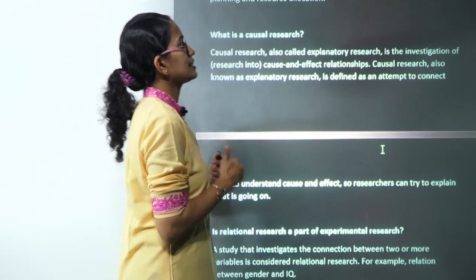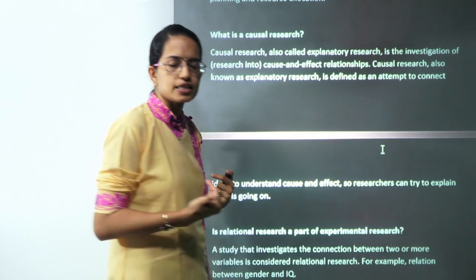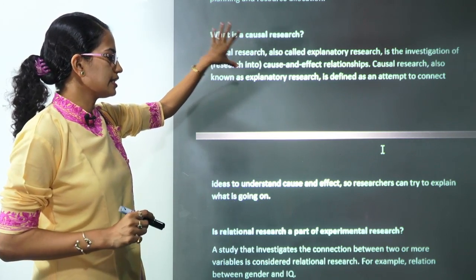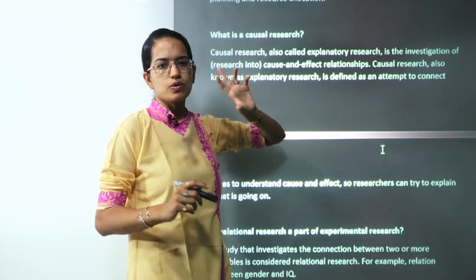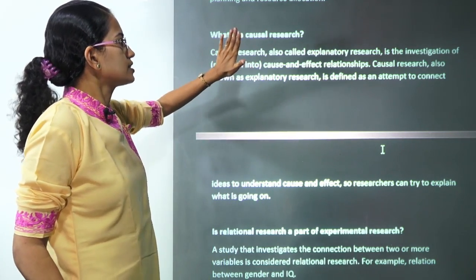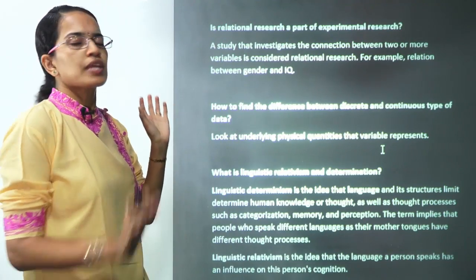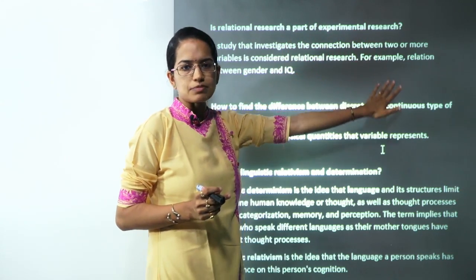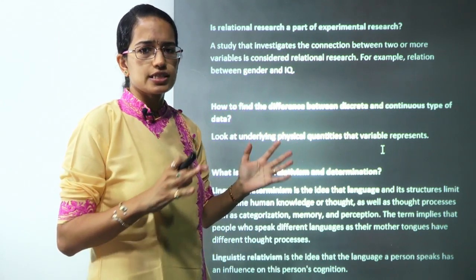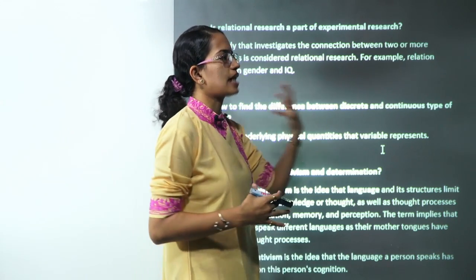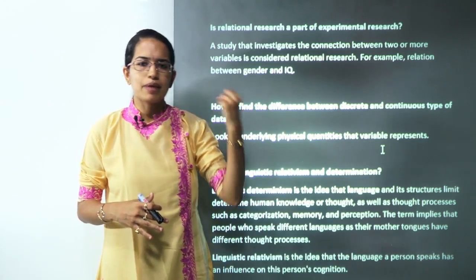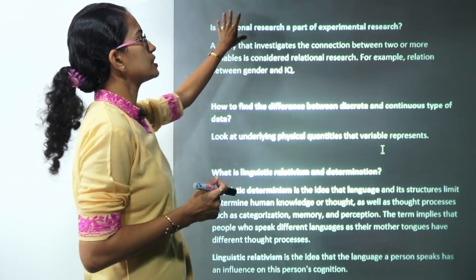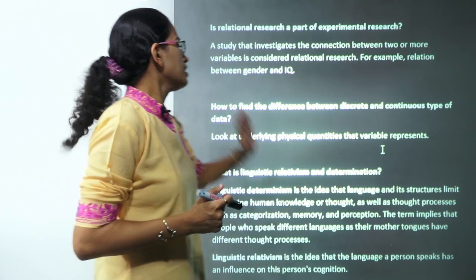What is casual research? Casual research is also known as explanatory research. We try to understand a cause-effect relationship under casual research — it's very important, and note the spelling: it's 'causal' research, not 'casual.' Is relational research a part of experimental research? Relational research is totally separate — you are trying to establish a relationship between two things. It can be done by experiment, correlation, observation, interview, or any other method. It is not necessary that relational research is part of experimental research.